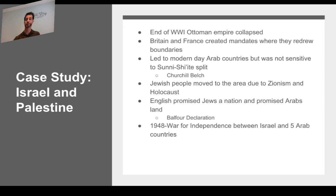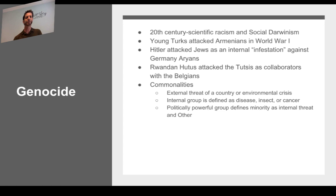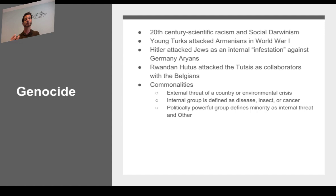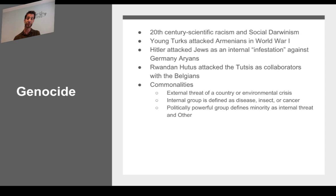Another major cultural and ideological issue is genocide. At the beginning of the 20th century, scientific racism and social Darwinism were widely accepted, leading to genocidal attacks. In Turkey, the Young Turks attacked the Armenians during World War I, believing they might ally with Russia. Most Armenians saw themselves as Turkish and wanted to remain connected to the country, but approximately two million Armenians lost their lives or were exiled.